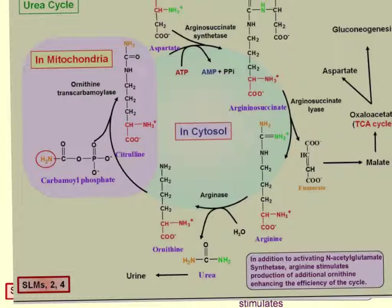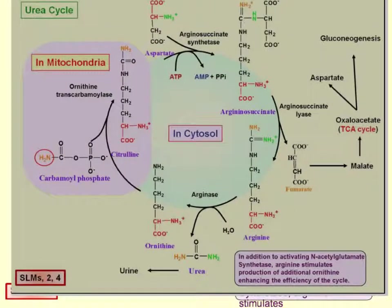Citrulline gets combined with aspartate using arginosucinate synthetase, using up an ATP to form arginosucinate. Arginosucinate then goes through the action of arginosucinate lyase to form arginine. In the process, fumarate is also produced, which can go back into the TCA cycle, feed gluconeogenesis, or yield aspartate. Fumarate is a TCA intermediate.